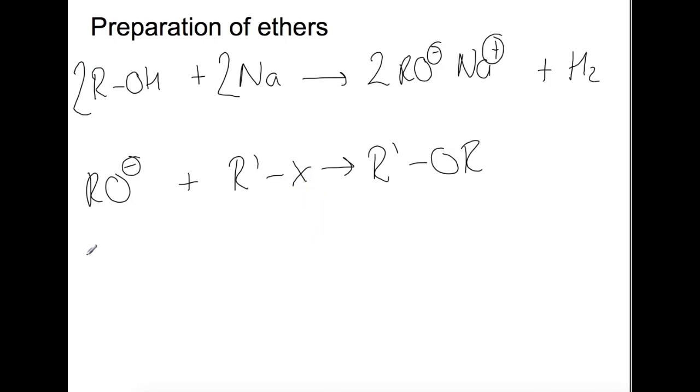Let's do an example using sodium and ethanol. If we react sodium with ethanol then you'll get sodium ethoxide which you can then go on to react with in this case chloroethane.